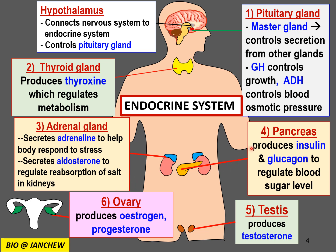The pancreas produces insulin and glucagon to regulate the blood sugar level. For example, after a meal of carbohydrates when blood sugar is too high, insulin stimulates the conversion of excess blood glucose to glycogen to lower the blood sugar level. The testes, the male reproductive organ, produce testosterone, the male sex hormone. The ovaries, the female reproductive organ, produce two female sex hormones: estrogen and progesterone.